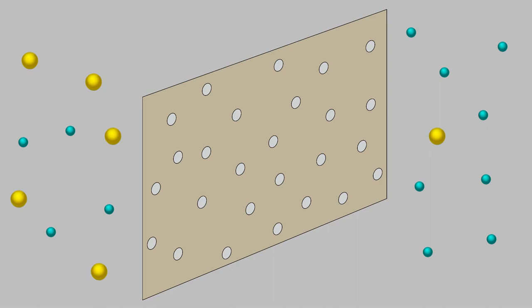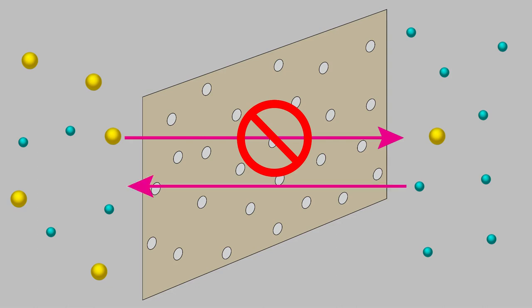The two solutions want to mix so that the concentration is the same on both sides. Since the solute concentration is higher on the left, some solute molecules would like to move to the other side. But remember, the pores are too small for the solute to get through.